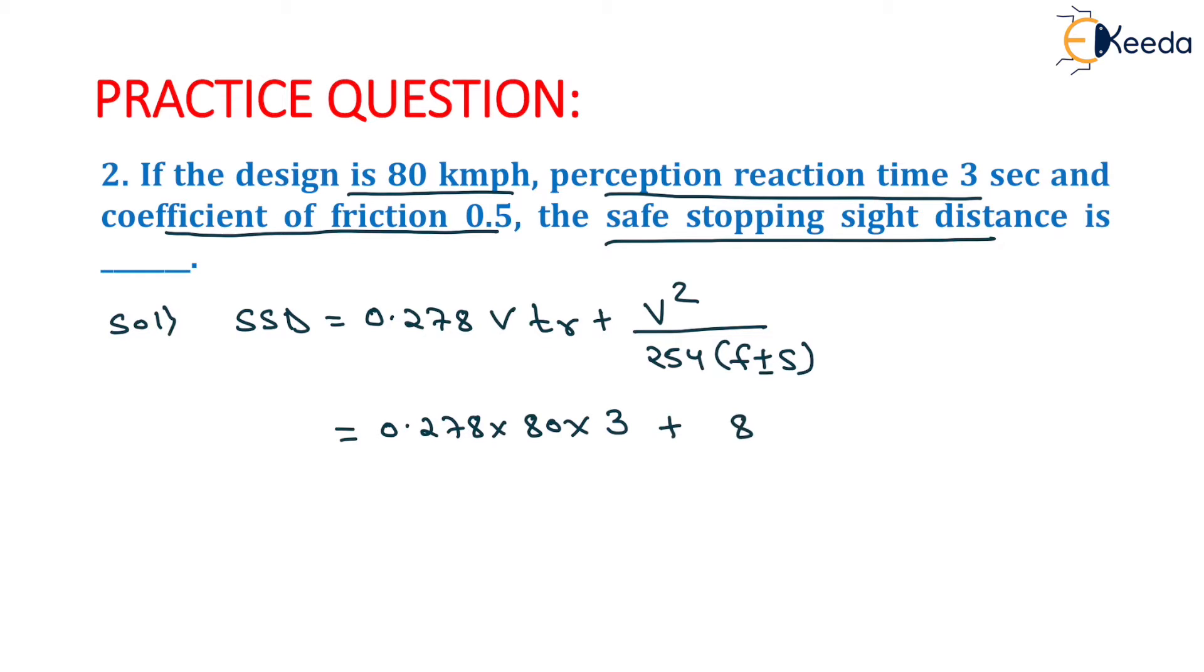V squared will be 80 squared upon 254 into the value of F is 0.5 and the value of S is 0 because it is not given in the question.